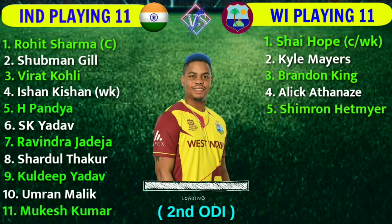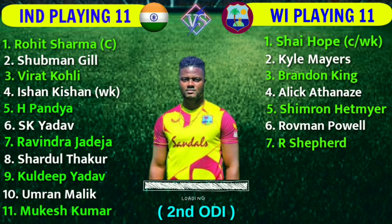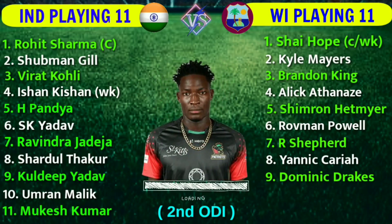5. Shimron Hetmyer — Left-Handed Batsman. 6. Rovman Powell — Right-Handed Batsman. 7. Romario Shepherd — All-Rounder. 8. Yannic Cariah — Right-Arm Spin Bowler.